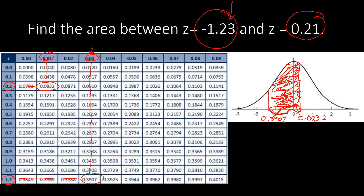Once done, we add the two areas because together they comprise the entire area we are looking for. So we add 0.3907 and 0.0832. Adding that up: 9, 3, carry the 1, giving us 0.4739 as the area for the entire region. That can also be written as 47.39 percent.